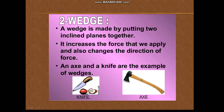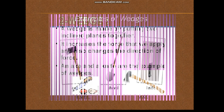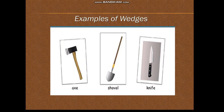A wedge has at least one inclined plane ending in a sharp edge. This sharp edge helps to cut things; it increases the force that we apply and also changes the direction of force. An axe, shovel, and knife are examples of wedges in our everyday life.